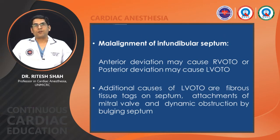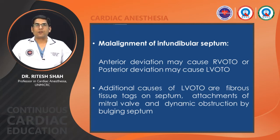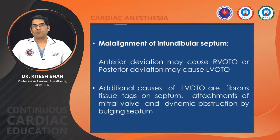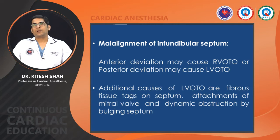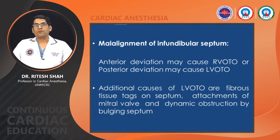Malalignment of the infundibular septum may cause RVOTO or LVOTO. Anterior deviation of the infundibular septum may cause right ventricular outflow tract obstruction, while posterior deviation may cause left ventricular outflow tract obstruction. Fibrous tissue attachments on the septum, attachment of the mitral valve, and dynamic obstruction by bulging septum can also occur. In patients with VSD, posterior deviation of the interventricular septum results in sub-pulmonic obstruction.